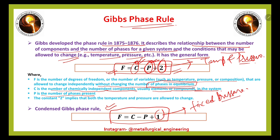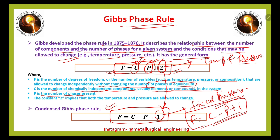The condensed Gibbs phase rule is given as F equals C minus P plus 1. The 1 is used because most metallurgical reactions occur at fixed pressure, so pressure is fixed and the 2 changes to 1. Generally, for a single-component system we use F equals C minus P plus 2, and for condensed systems like binary and ternary systems we use F equals C minus P plus 1.